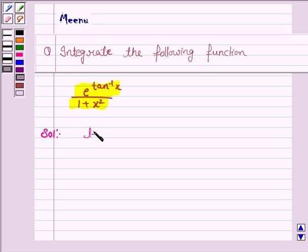Let I be the integral e to the power tan inverse x upon 1 plus x square dx. Now here we see that the derivative of tan inverse x is 1 upon 1 plus x square. That is this thing.